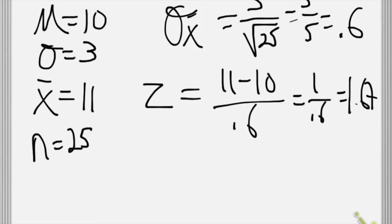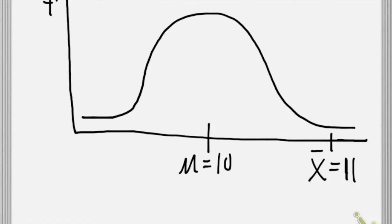1 and 2 thirds, if I'm not mistaken. Okay, so we found a z-score of 1.67.